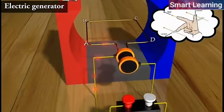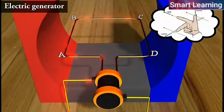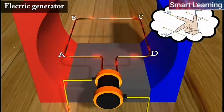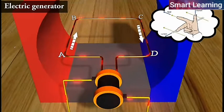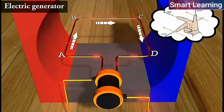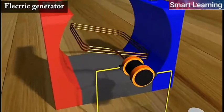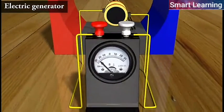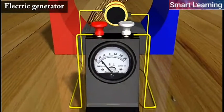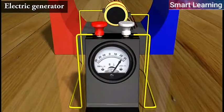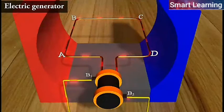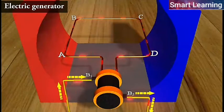By applying Fleming's right-hand rule, the induced currents are set up in these arms along the directions AB and CD. Thus, an induced current flows in the direction ABCD. If there are larger number of turns in the coil, the current generated in each turn adds up to give a large current through the coil. This means that the current in the external circuit flows from B2 to B1.